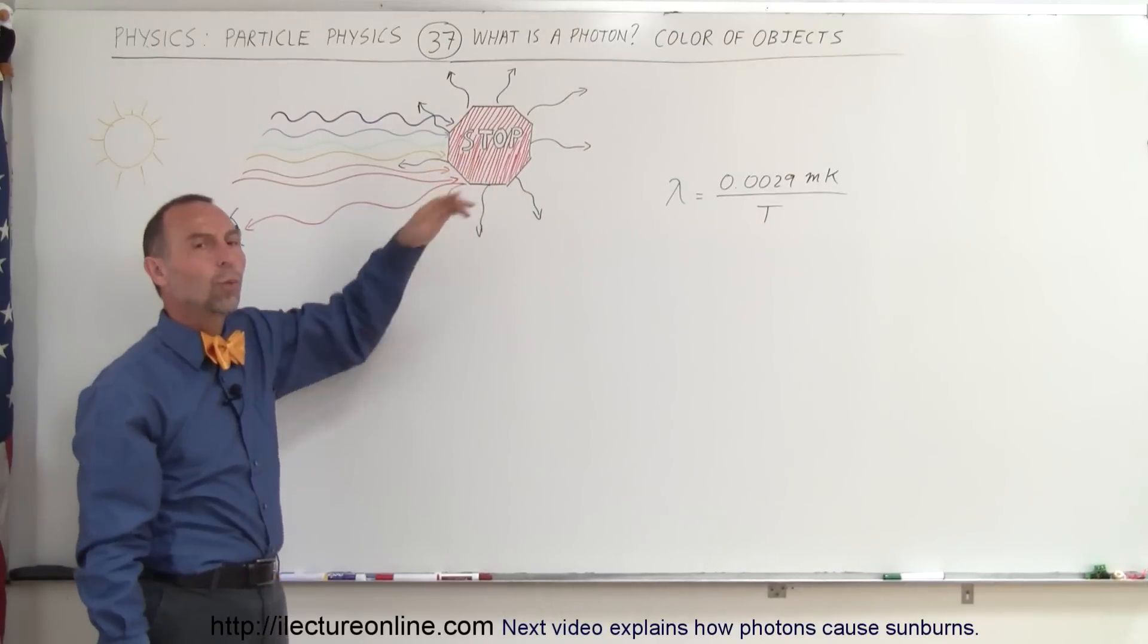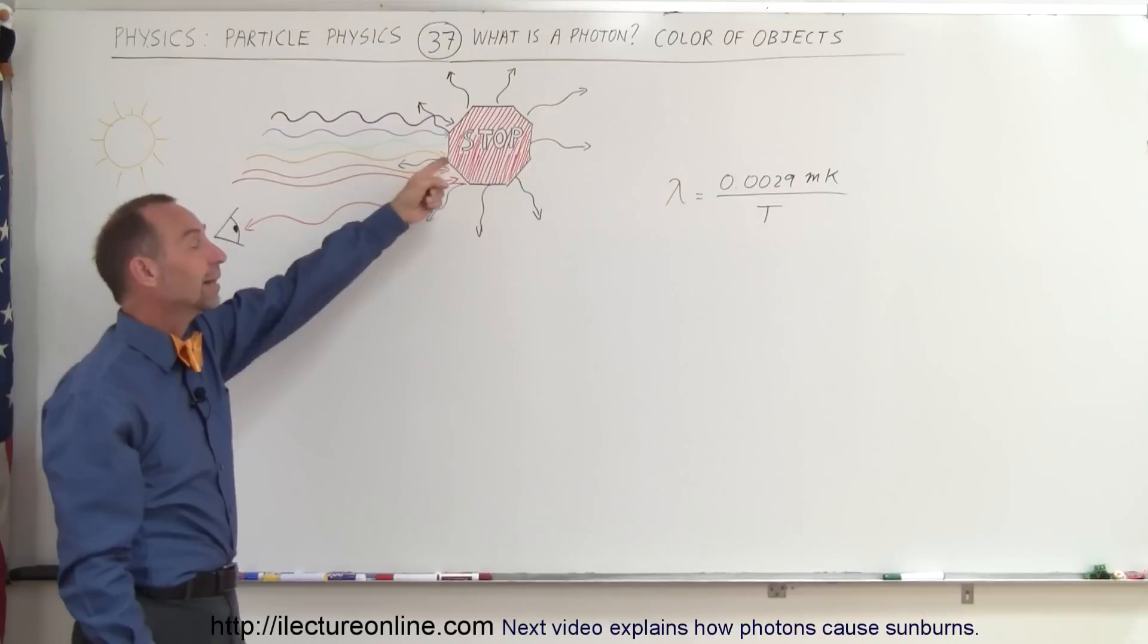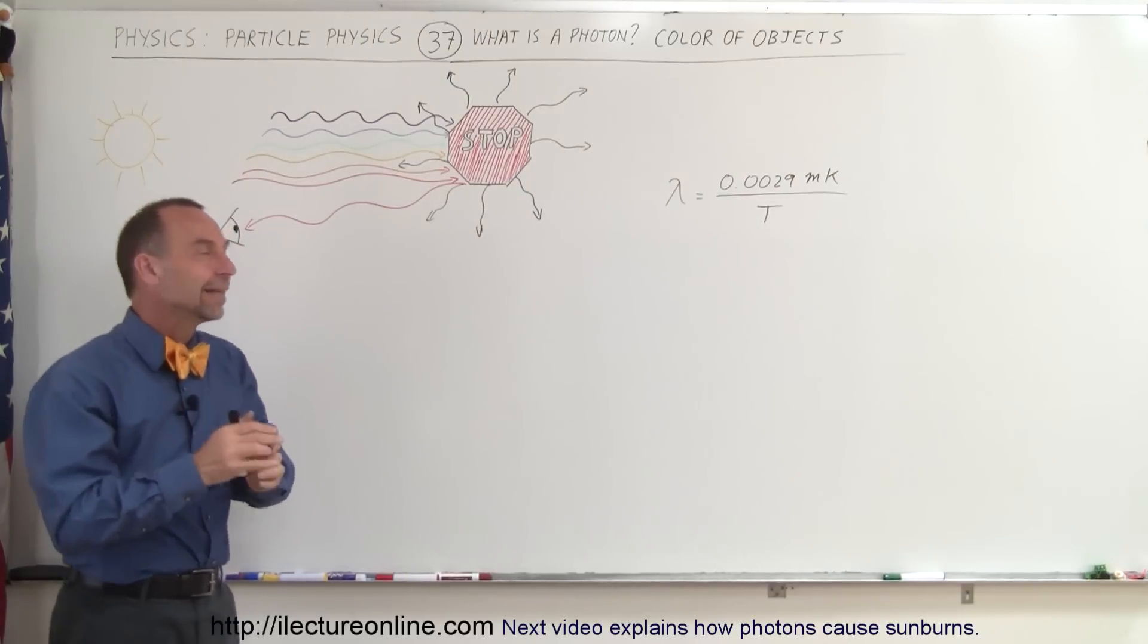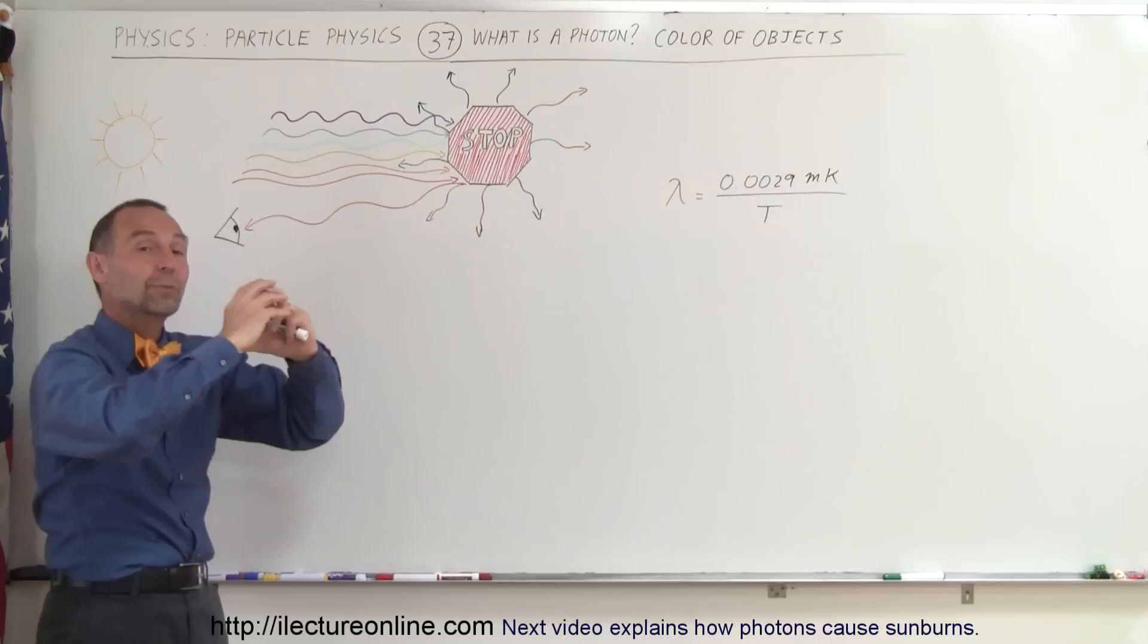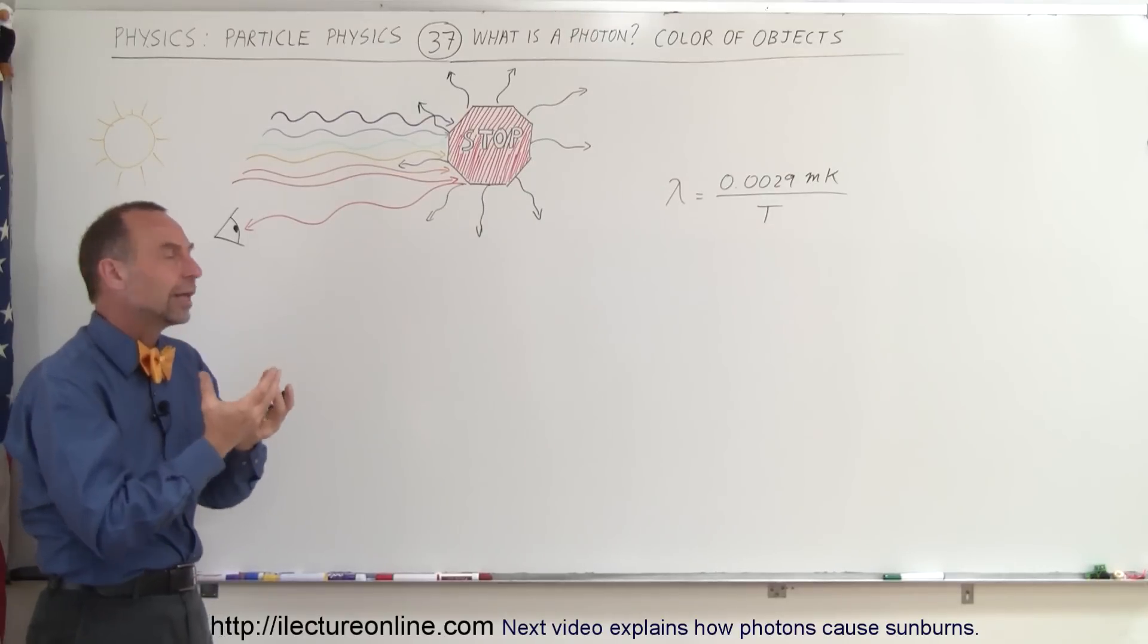Now why do the letters look white? Well it turns out that the letters are made of a certain paint that reflects all the colors of the rainbow, and when you see all the colors of the rainbow together then that light will look white.